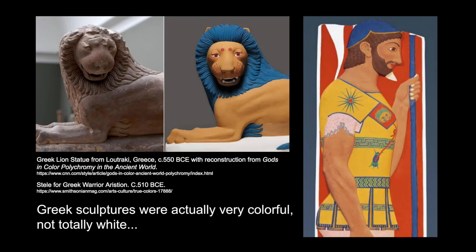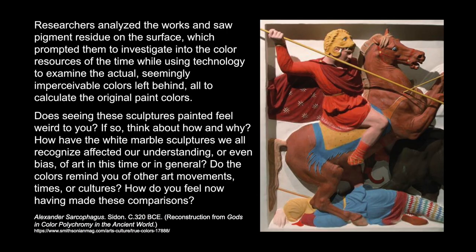Another takeaway: we see the origins of major conventions that still exist today. Greek sculptures were actually very colorful and not totally white — the way we see them today is not how they were intended to look. These images come from the show Gods in Color, which features reconstructions painted to what scientists think these sculptures would have looked like, based on pigments found on the surface. Researchers combined their knowledge of the time with technology to examine the surface of the material. Questions to consider: does seeing these sculptures painted feel weird to you? How have the white marble sculptures we all recognize affected our understanding or even bias of art in this time period or in general? Do the colors remind you of other art movements, times, or cultures?